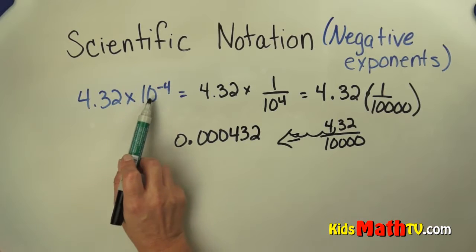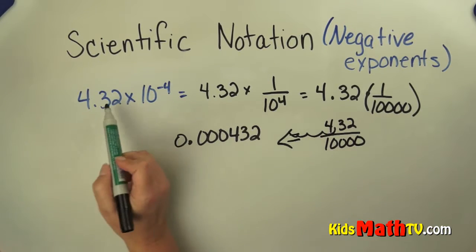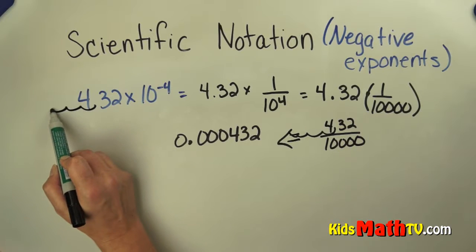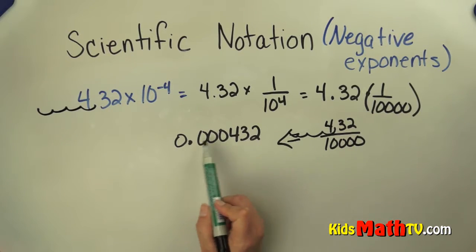So in standard form, 4.32 times 10 to the negative 4 is 0.000432. So I've moved the decimal 1, 2, 3, 4 times to the left. We have the 3 placeholder zeros.